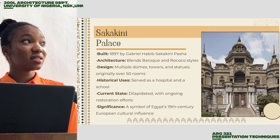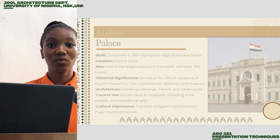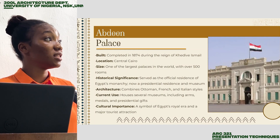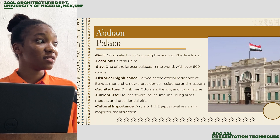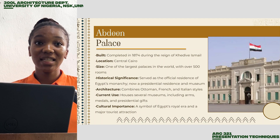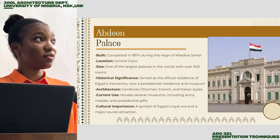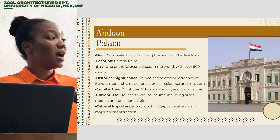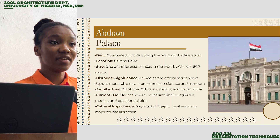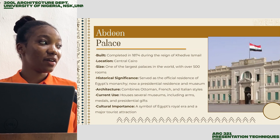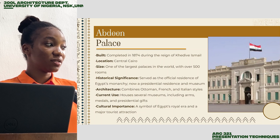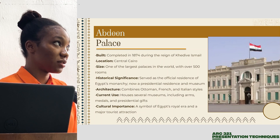The second case study is the Abdin Palace. It was completed in 1874 and it is significant because it is a symbol of Egypt's royal era and a major tourist site attraction.